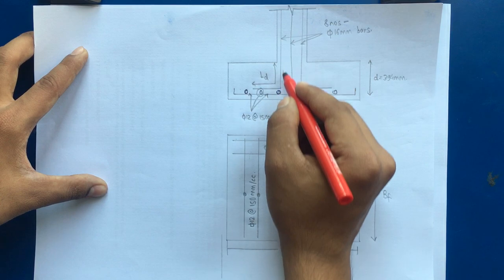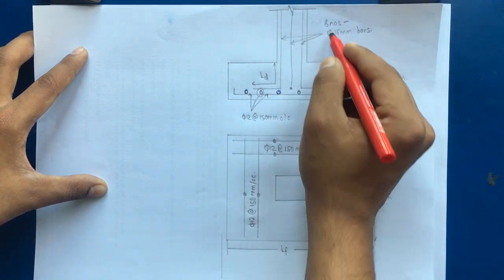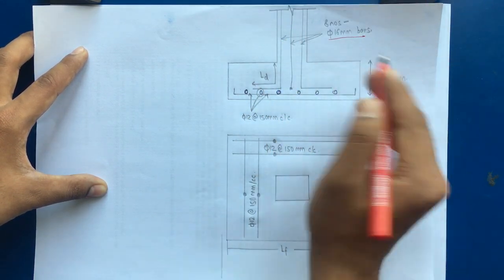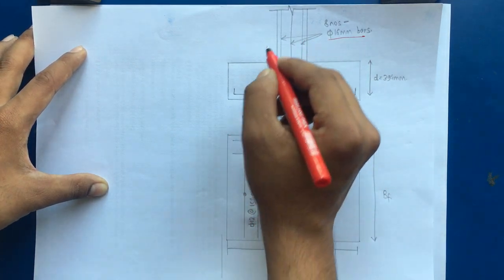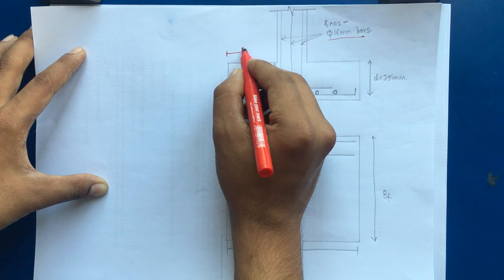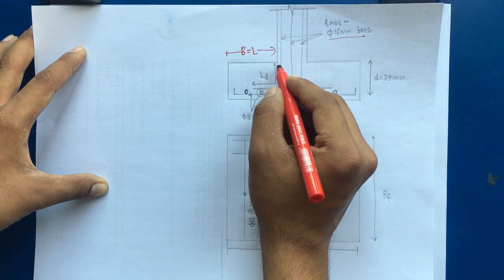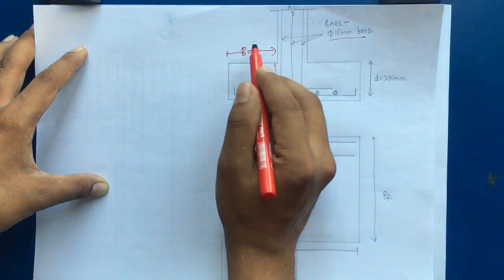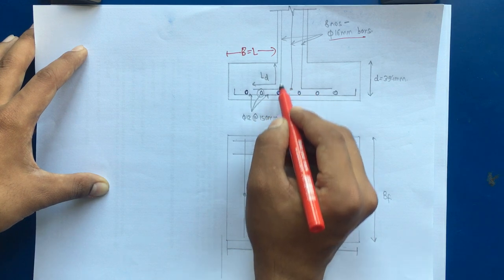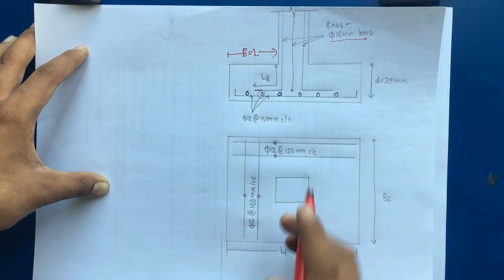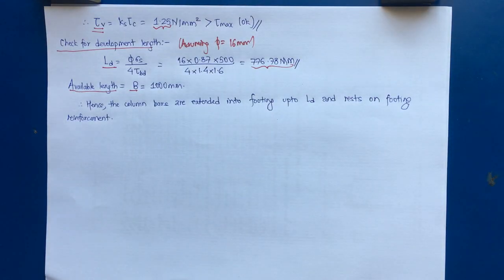In the reinforcement drawing, 8 numbers of 16 mm column bars extend into the footing, with the available projection being greater than the required development length. In this way, a footing subjected to biaxial moment and axial load has been fully designed. If this helped, please like, subscribe, and comment if you have any questions.